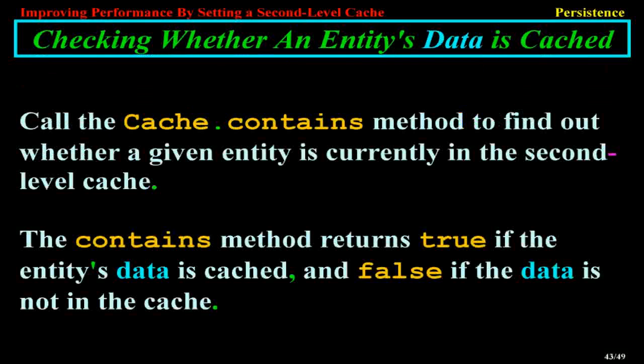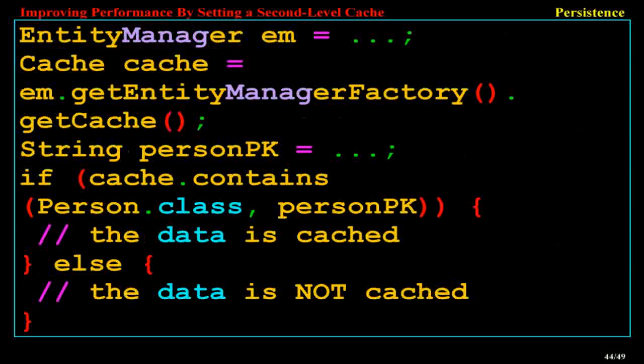Checking Whether an Entity's Data is Cached. Call the Cache.contains method to find out whether a given entity is currently in the second-level cache. The contains method returns true if the entity's data is cached, and false if the data is not in the cache. EntityManager m = ...; Cache cache = m.getEntityManagerFactory().getCache(); String personPK = ...; if (cache.contains(Person.class, personPK)) { // the data is cached } else { // the data is not cached }.